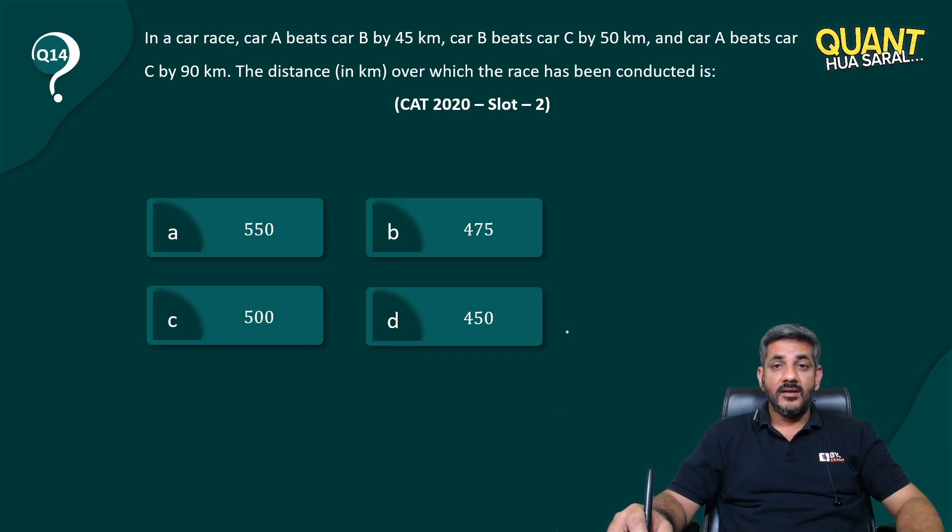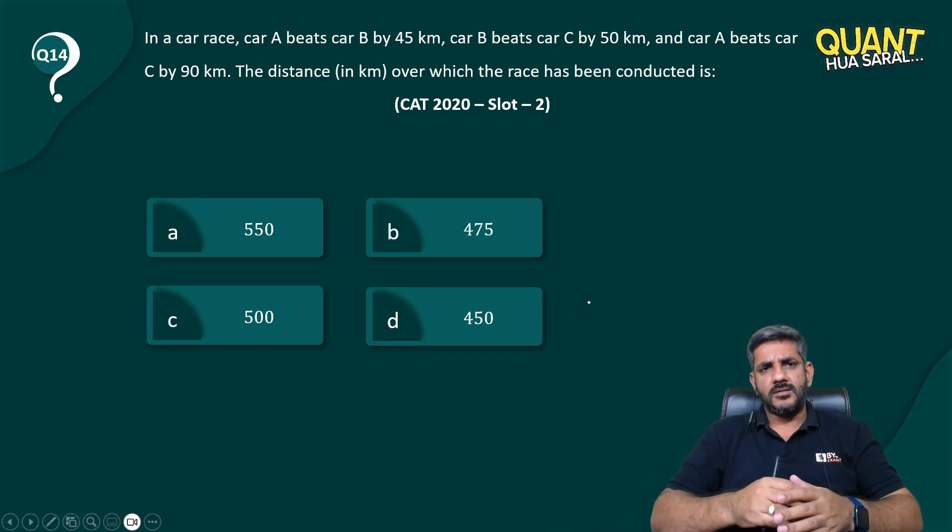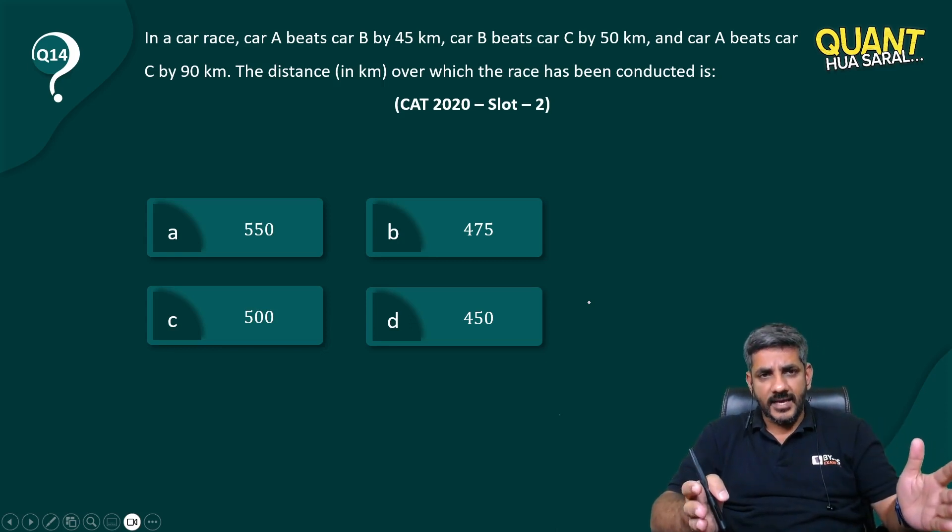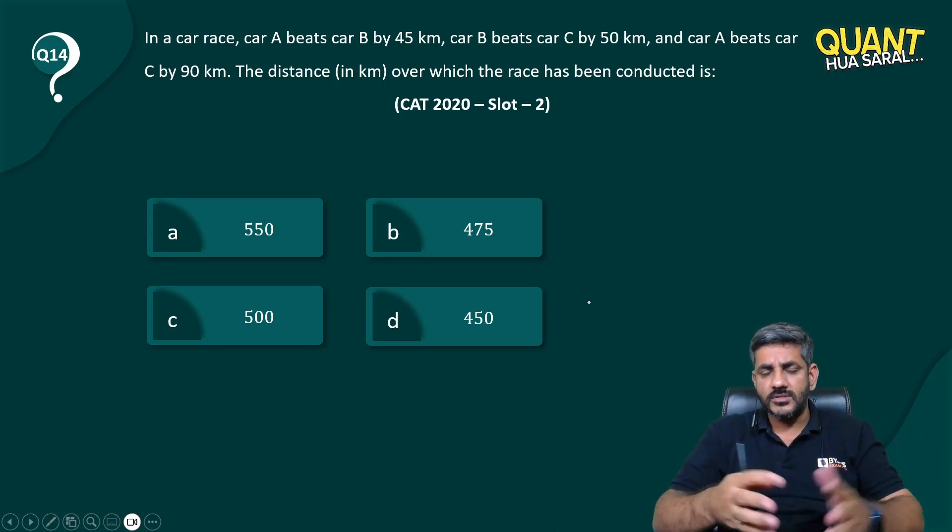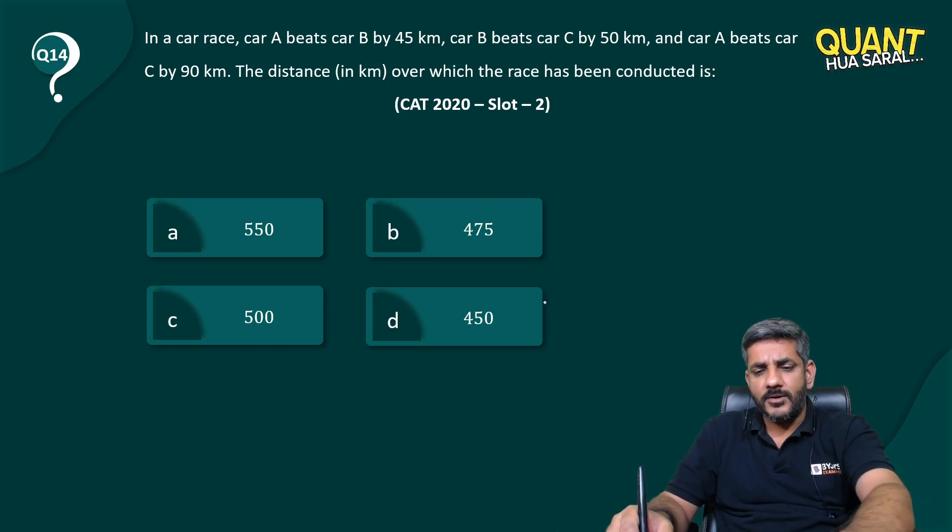Now this is a question of course in which you take the total length of the race as x kilometers, you take two ratios, and then you try to answer the question. I'm just giving you an aptitude solution of this question.